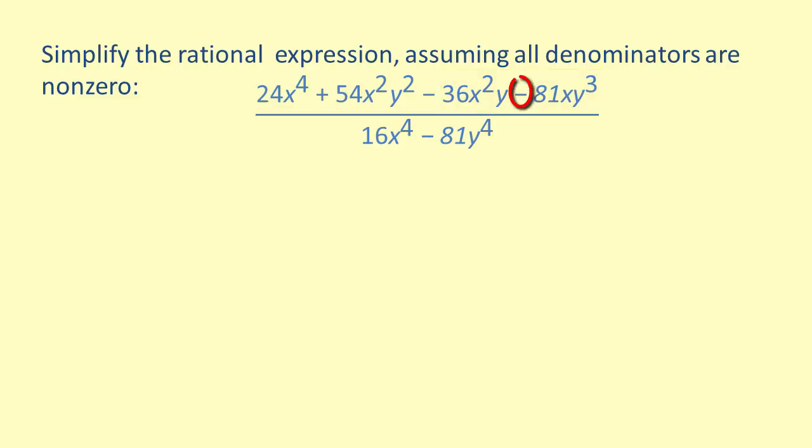Remember to change the minus sign to a plus sign in the second group because of the subtraction sign. To continue with the factoring, remove the common factor of 6x squared from the first group, and remove the common factor of 9xy from the second group.